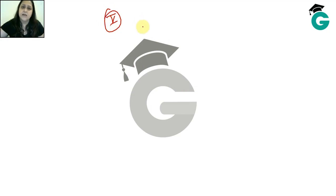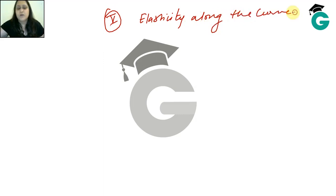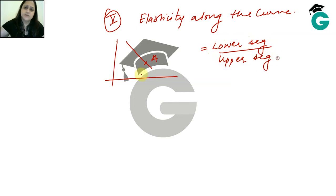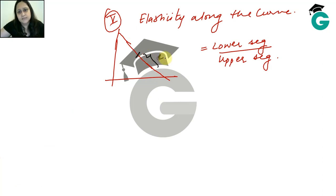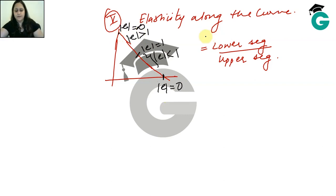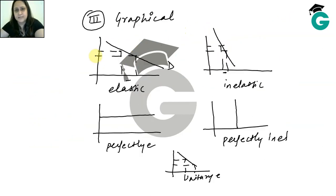The fifth method is elasticity along the curve. For a straight-line demand curve, elasticity at any point A equals the lower segment divided by the upper segment. At the midpoint, elasticity equals 1. Above the midpoint, elasticity is greater than 1. At the top end, the upper segment is zero so elasticity equals infinity. At the bottom end, the lower segment is zero so elasticity equals zero.